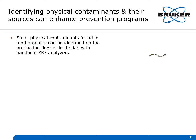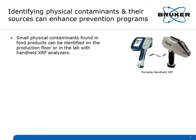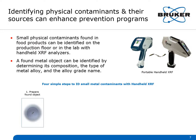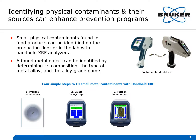Identifying the source of a contaminant can really enhance your prevention program. Even very small pieces of metal can be identified with handheld XRF analyzers. A found metal object can be identified with XRF by determining its composition, the type of alloy it is, and the alloy grade name. There are four simple steps to ID metal contaminants with handheld XRF: first, prepare the piece of metal so that XRF can see it; then select the alloys application on the ready-to-test screen; position the found object to the XRF's window view; and start the test and view the results on the screen — in this case, it's 316 stainless steel.